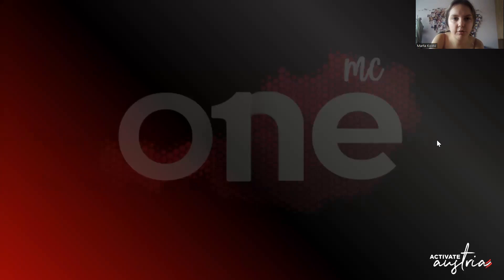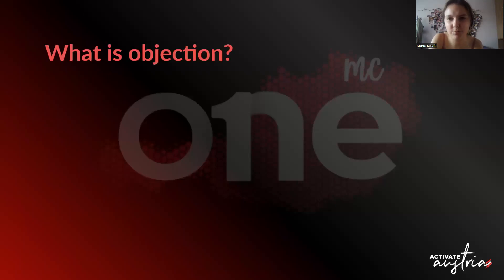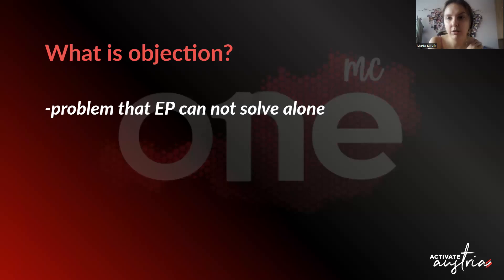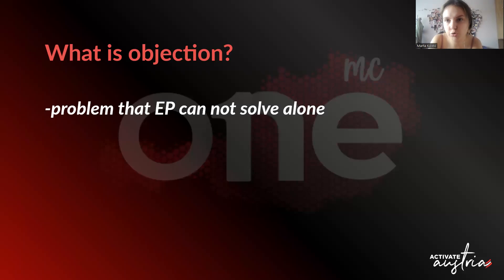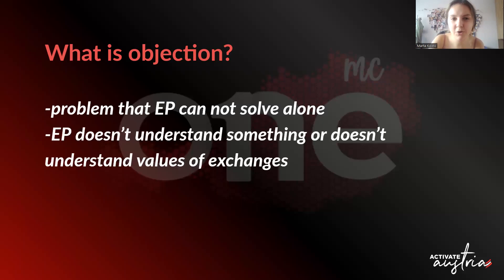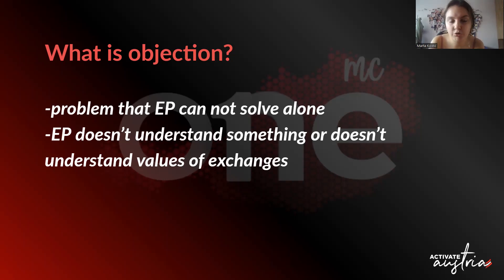First, let's talk about what an objection actually is. An objection is some problem that the EP cannot solve alone. For example, EP has some concern or is not sure about something, and they feel like they can't go on exchange because of that. Objections also happen when EP doesn't understand something — for example, whether an internship is paid or not, or they don't understand the values of exchanges.